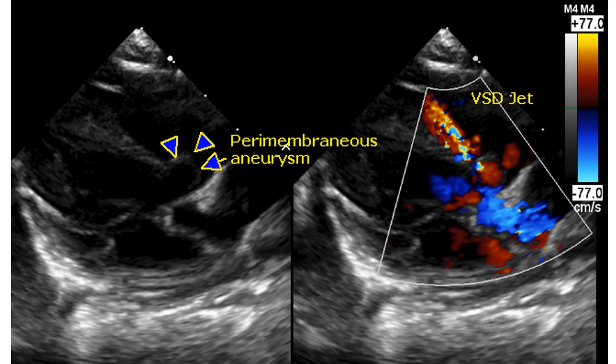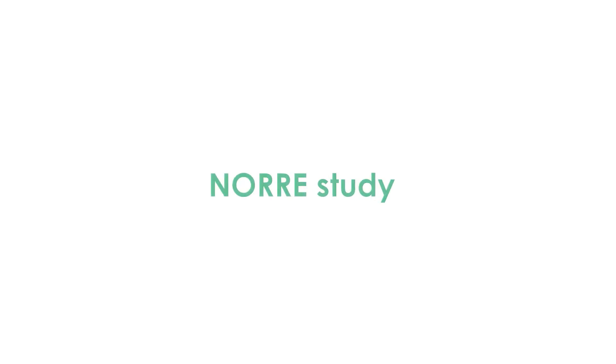If the VSD is more than half of the aortic annulus, it is considered a large VSD. There is another classification into small, medium, and large depending on VSD size being less than one-third, one-third to two-thirds, and more than two-thirds of aortic size.